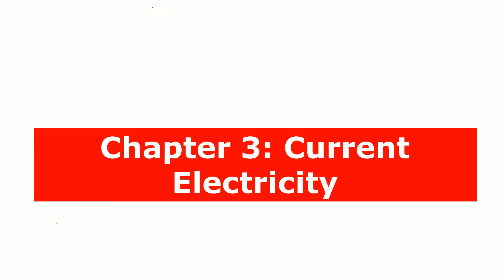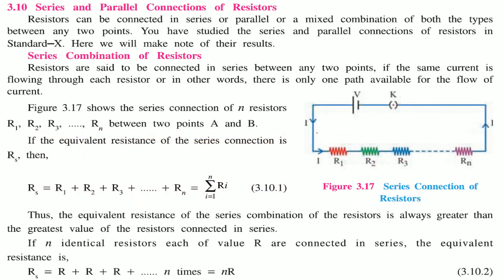We are looking at chapter 3, which is current electricity. Resistors can be connected in series, parallel, or a combination of both types between any two points. We have already seen the series and parallel connections of resistors; here we are going to talk about the results and more combinations.